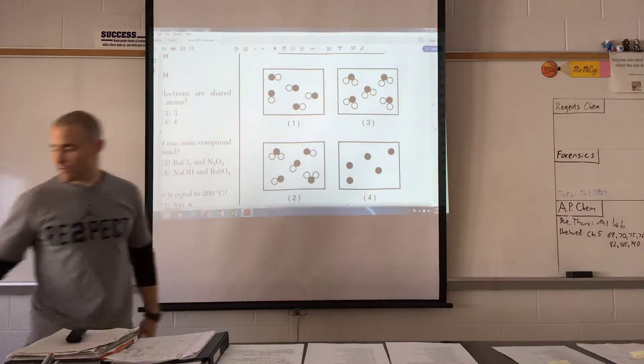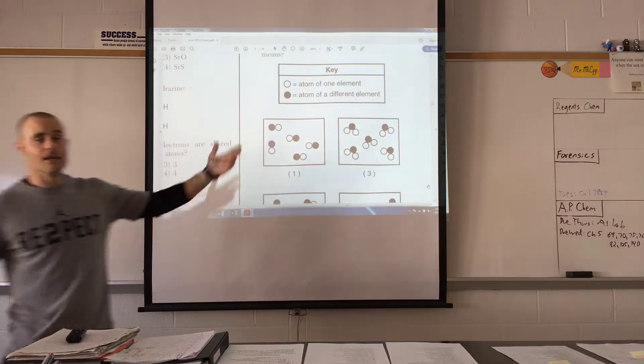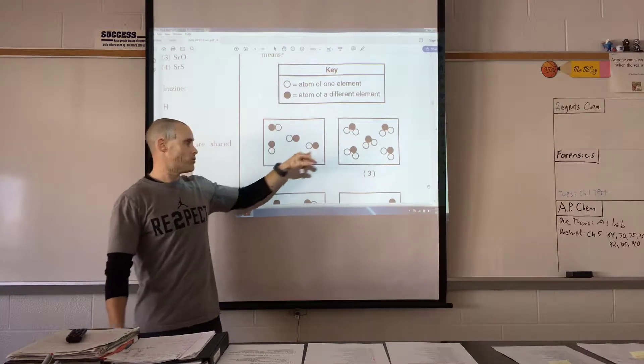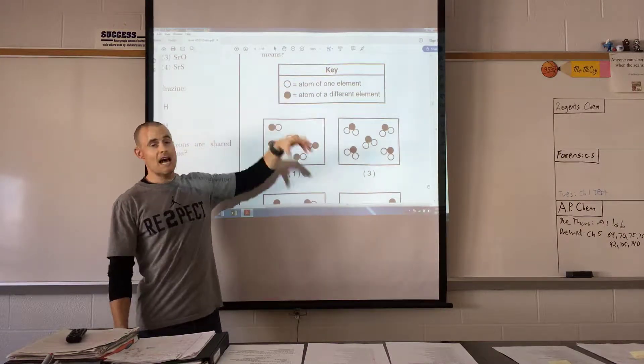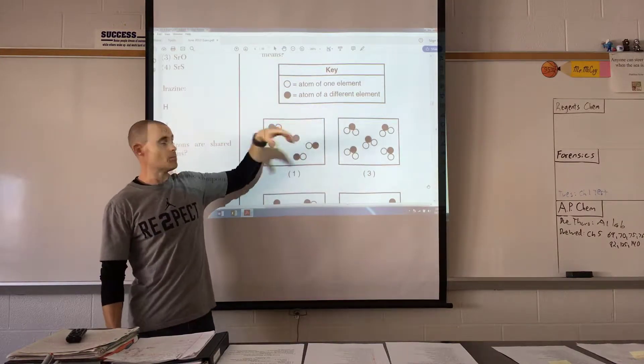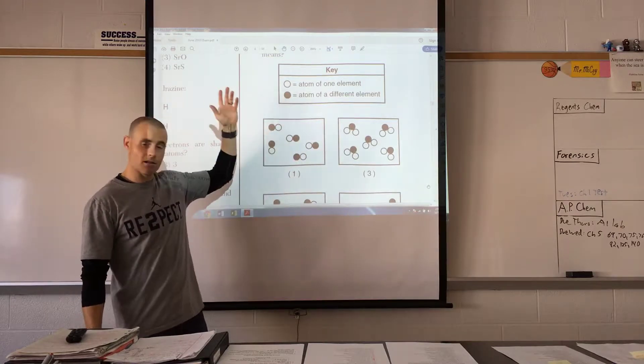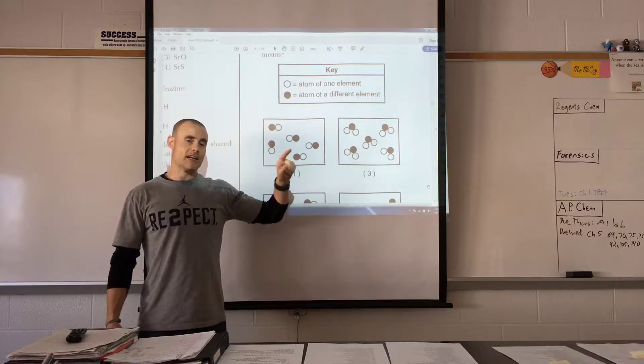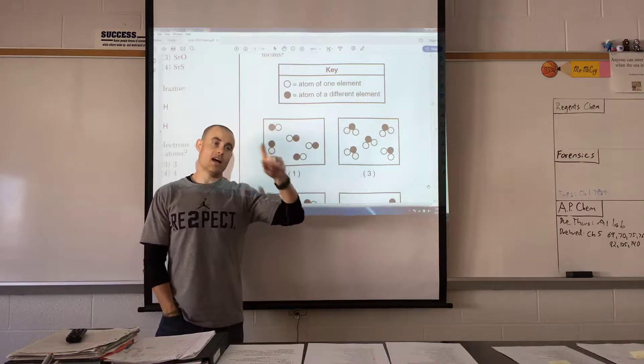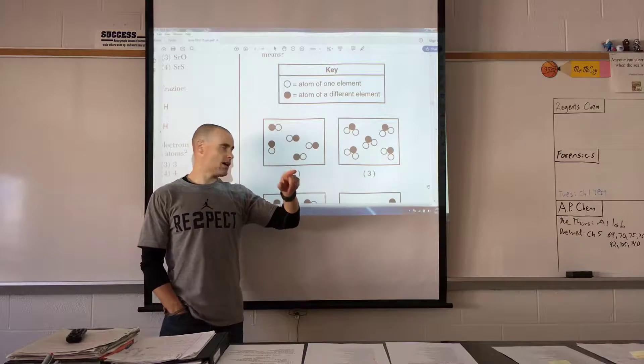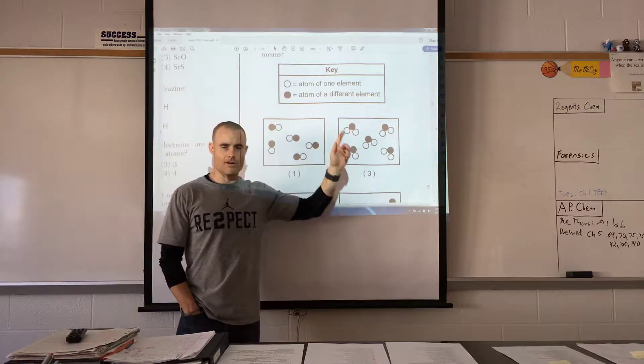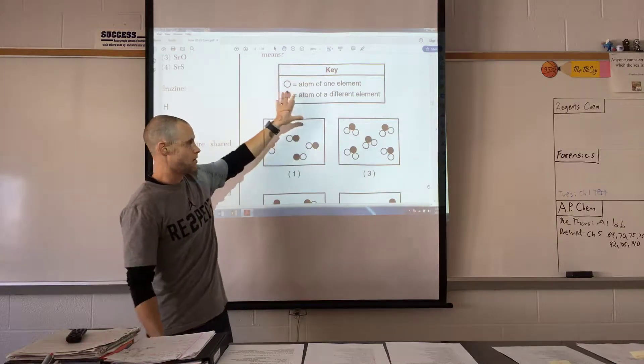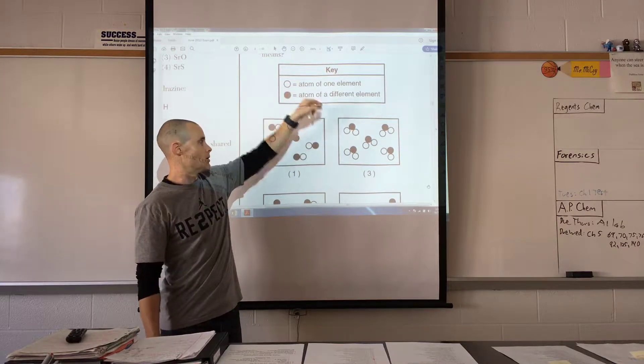All right, so let me zoom in here. Let's go to 200% and see if that will fit on the screen. Okay. All right, let's do that. So up here you see there is a key. This is the same key every year, forever and ever, on a Regents. If they give you a particle diagram, the white one will be an atom of one element and the black one will be an atom of a different.